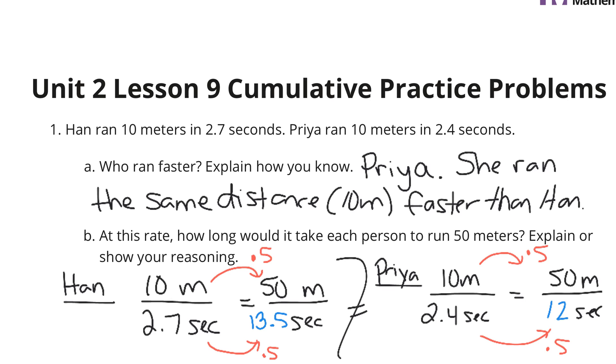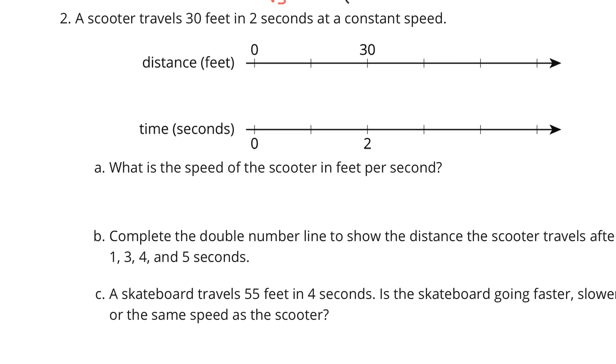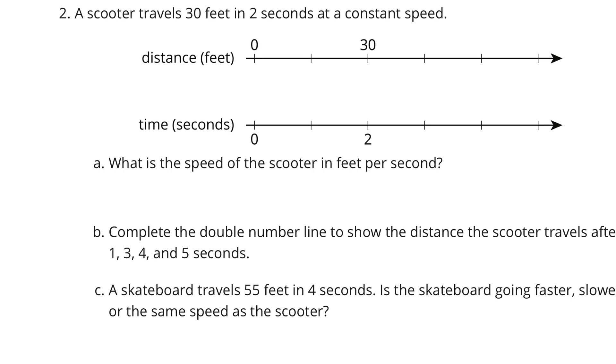Alright, let's continue on to question 2. A scooter travels 30 feet in 2 seconds at a constant speed. What is the speed of the scooter in feet per second? Well, if I come down to 1 second here, I'm cutting that in half. 2 to 1, I'm cutting in half, dividing by 2. So 30 divided by 2 is 15 feet. And then if we count up 1, 2, 3, 4, 5 seconds to complete this double number line, we're going up by 15 up top. So 15, 30, 45, 60, 75.